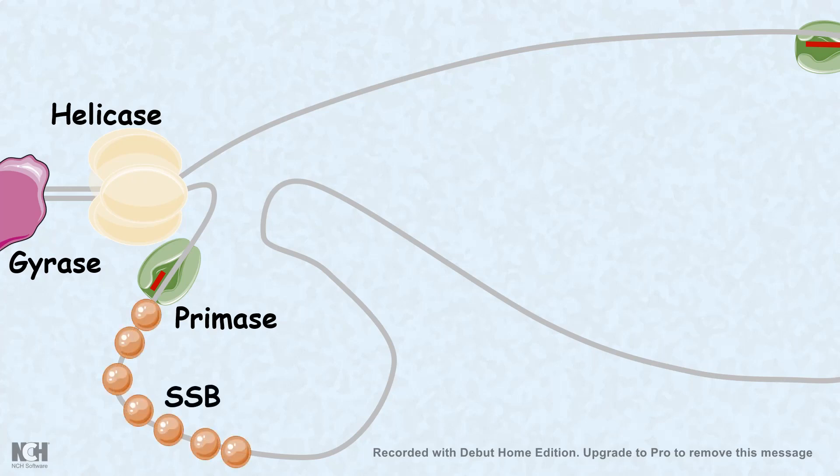There are single strand binding protein. The single strand binding protein binds to the single strand which are now unwound with the help of helicase. They keep the strands in a relaxed situation or they prevent the strand to intertwine with each other. And that is the important function of single strand binding protein.